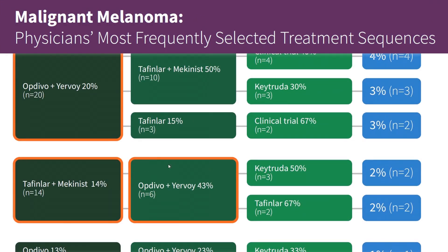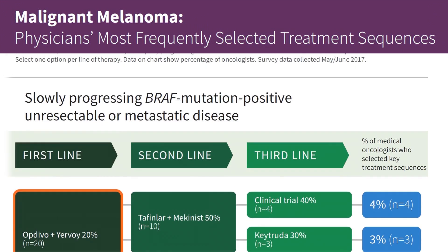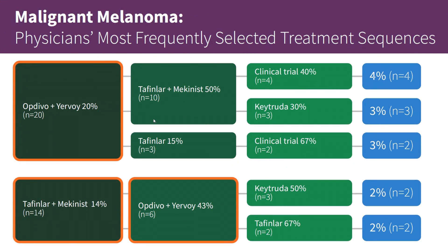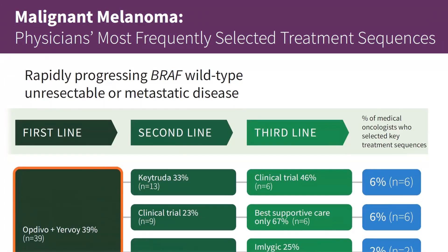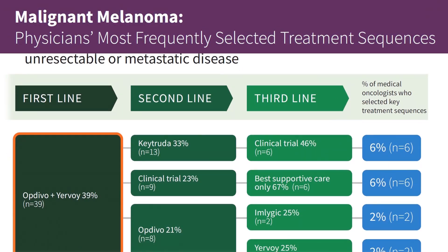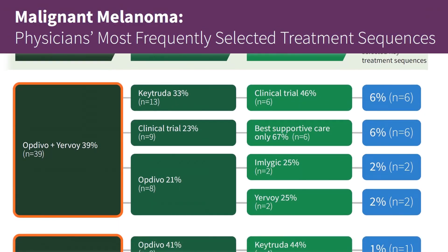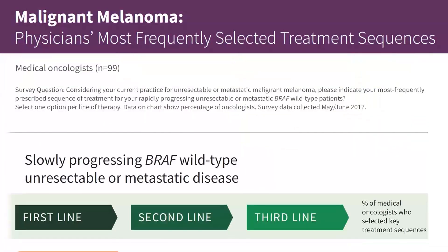But in slowly progressing patients, OPDIVO and Yervoy is most frequently prescribed in the first line treatment setting. For a complete picture we need to consider the BRAF wild type patients, and we can see that a similar percentage of physicians report OPDIVO and Yervoy use in both rapidly and slowly progressing patients.